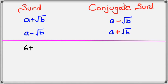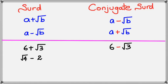Looking at this in terms of numbers: if we have 6 plus square root of 3, then the conjugate surd would be 6 minus square root of 3. However, if we have square root of 4 minus 2, then the conjugate surd would be negative square root of 4 minus 2. Remember, it's always the square root symbol that you're going to be changing.